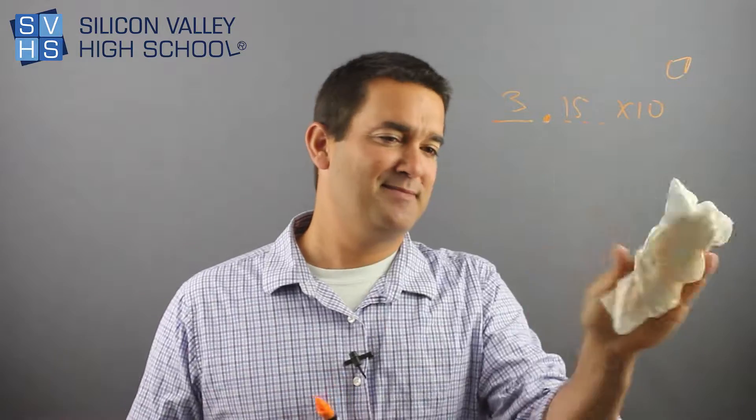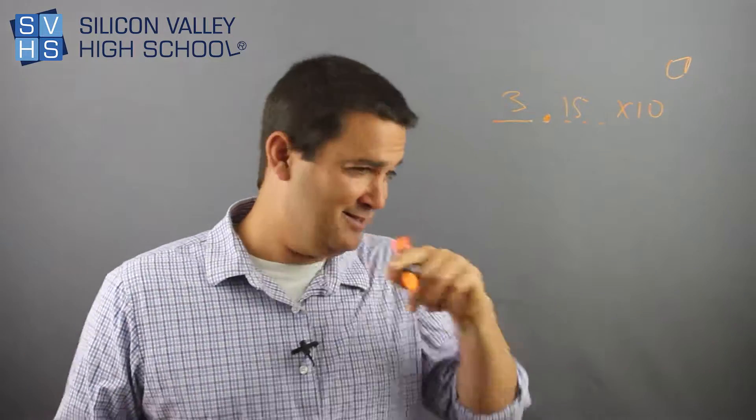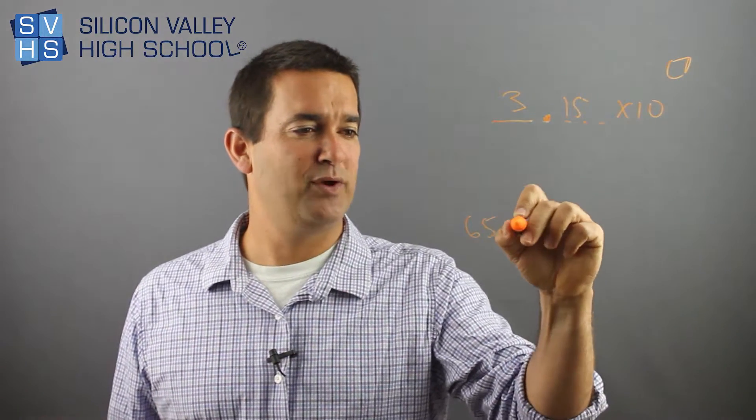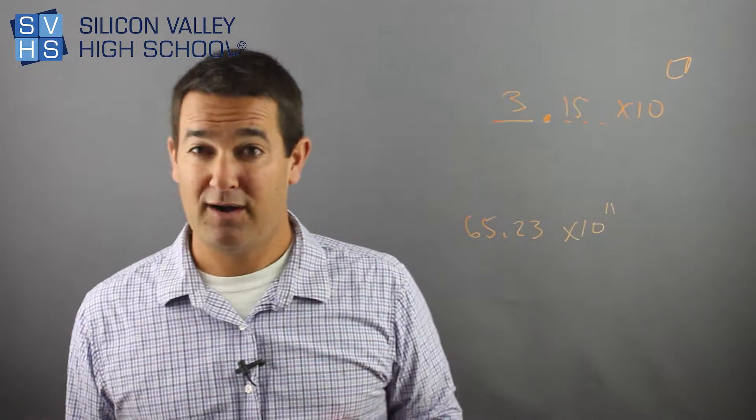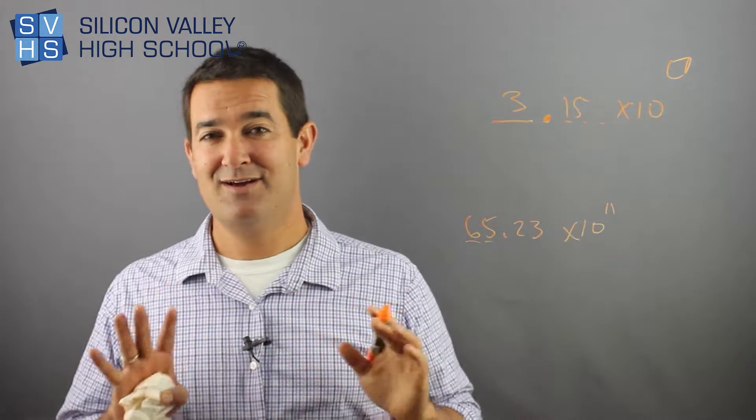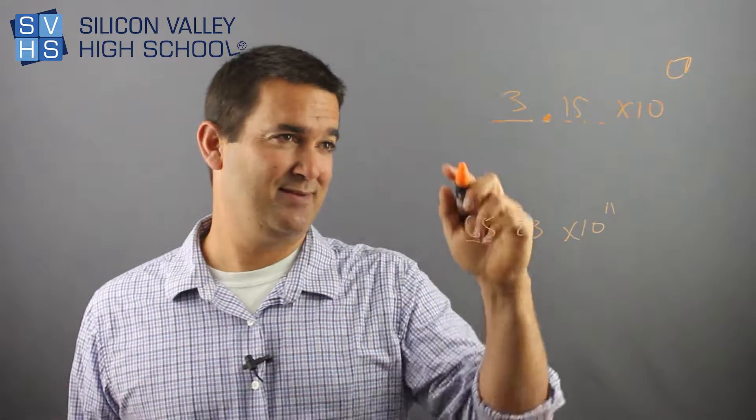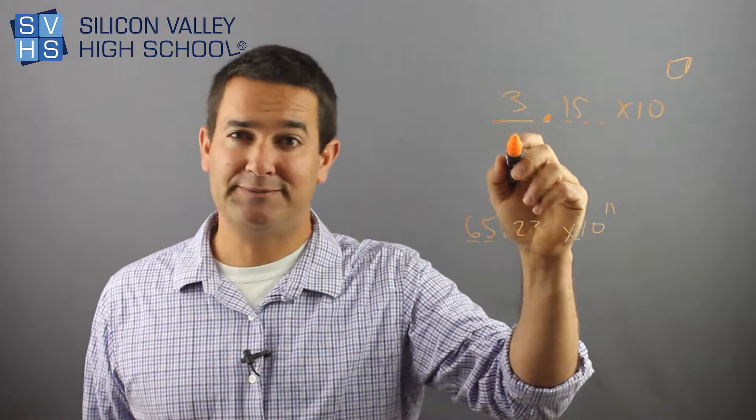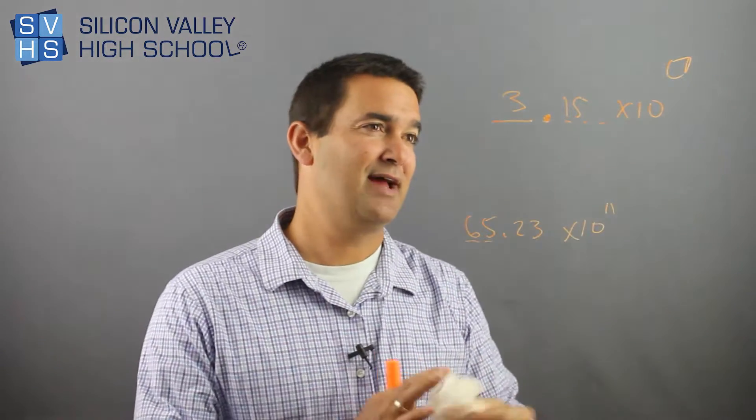Similarly, this is wrong. They might be like, okay, let's see, 65.23 times 10 to the 11th. So again, automatically wrong. There's two whole numbers before the decimal. So that's rule number one for some random reason when they invented it, whole number, decimal, and then whatever.